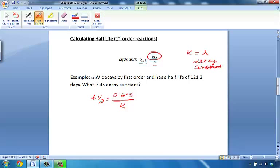So we'll plug in the half-life here as 121.2 days. That is equal to 0.693, or the ln of 2, over k, which is what we're solving for. And k will be equal to 0.693 over 121.2 days, which will equal 5.7 times 10 to the minus 3, if you divide 0.693 by 121.2.